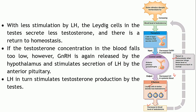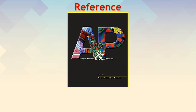On the contrary, when testosterone levels fall, it stimulates the release of GnRH, which in turn acts on the anterior pituitary to increase LH secretion. This in turn acts on the Leydig cells to increase testosterone secretion, bringing levels back to normal. This is how the regulation of secretion of testosterone — the main male androgen — takes place.